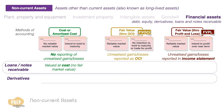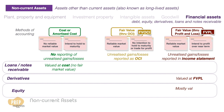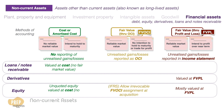Derivatives are mostly measured at FVPL. Most equity securities are also measured at FVPL. However, IFRS does allow companies to irrevocably choose FVOCI accounting at the point of acquisition, and this designation cannot be changed later. Unquoted equity for which fair value cannot be determined reliably should be measured at cost.